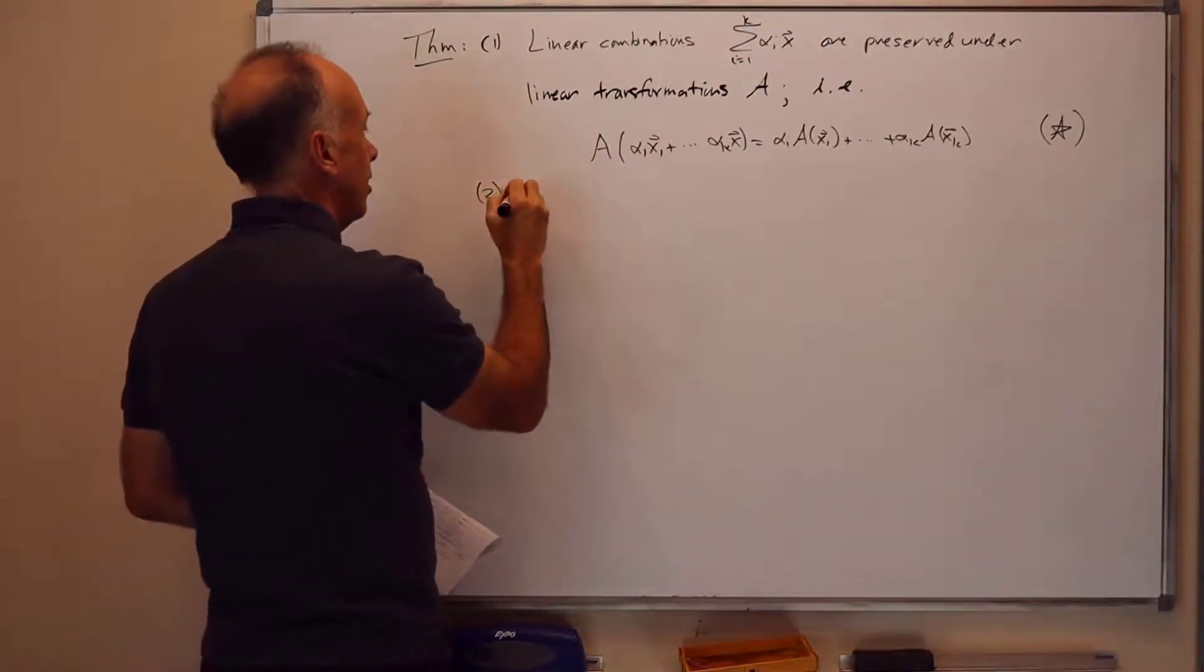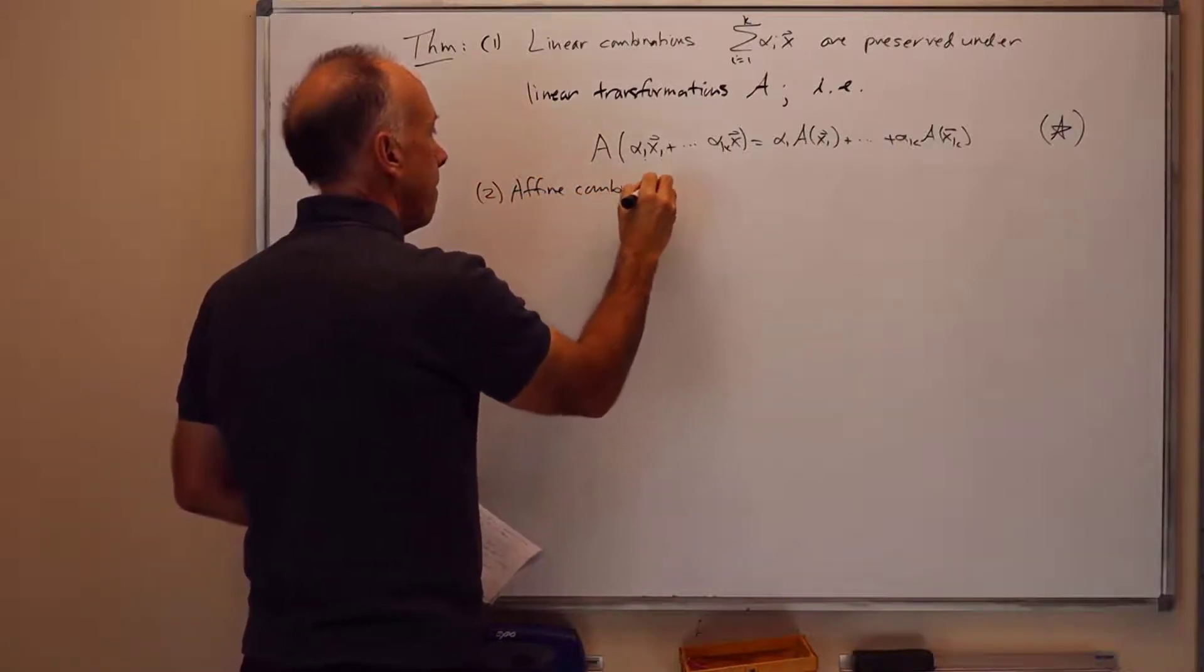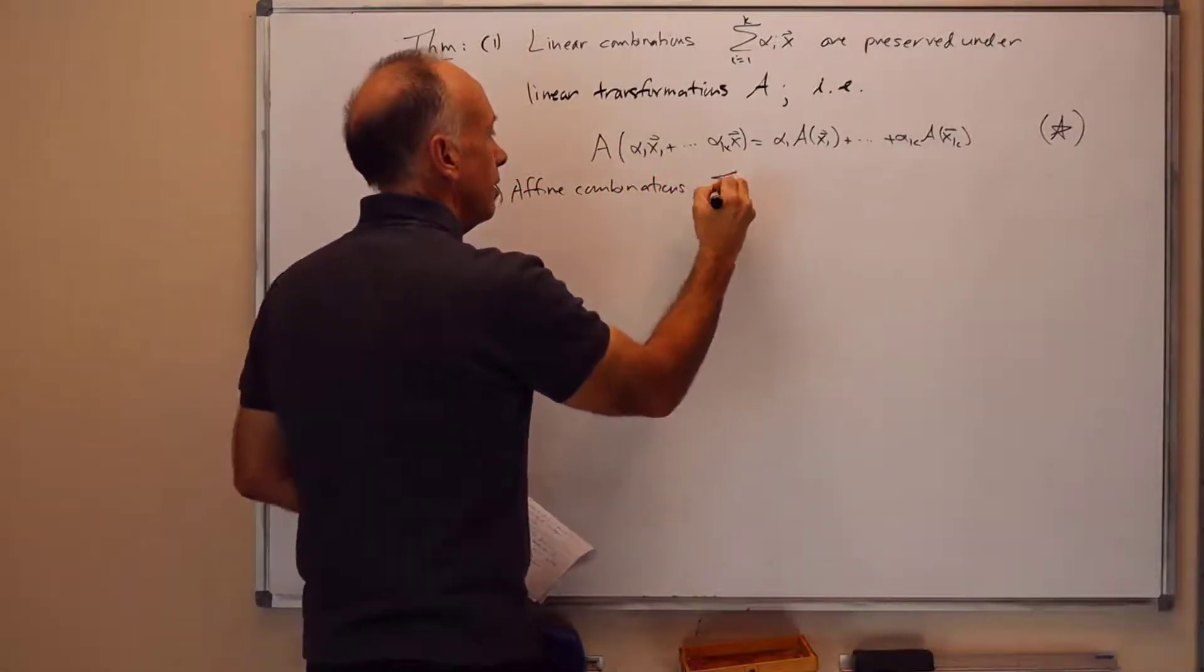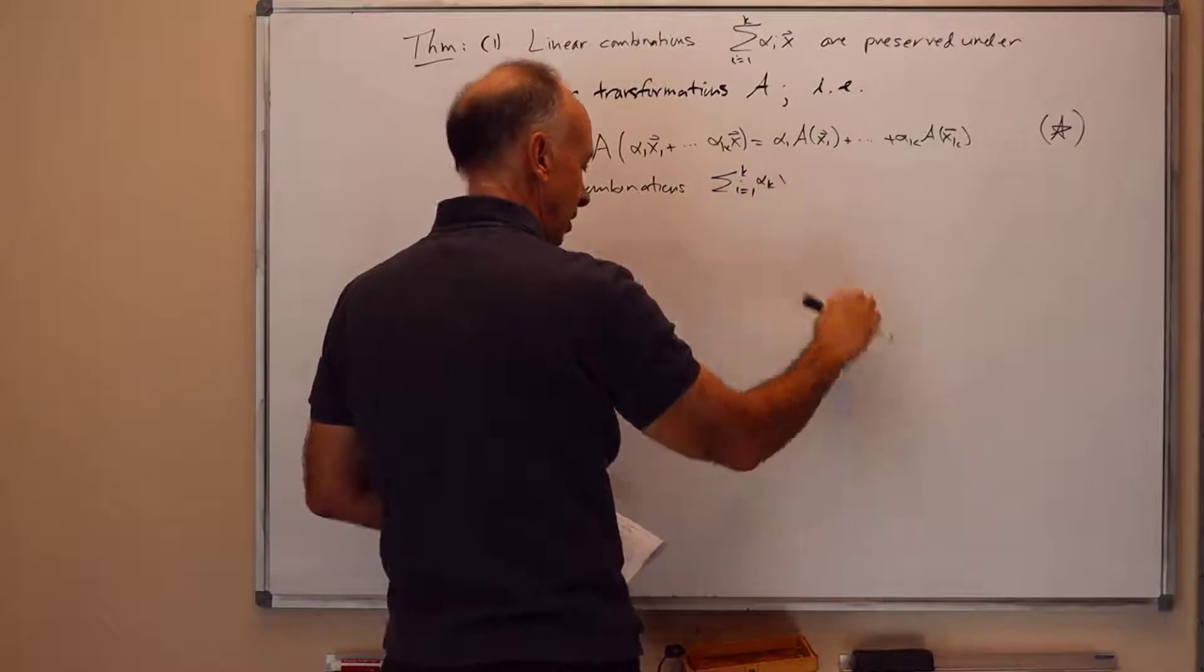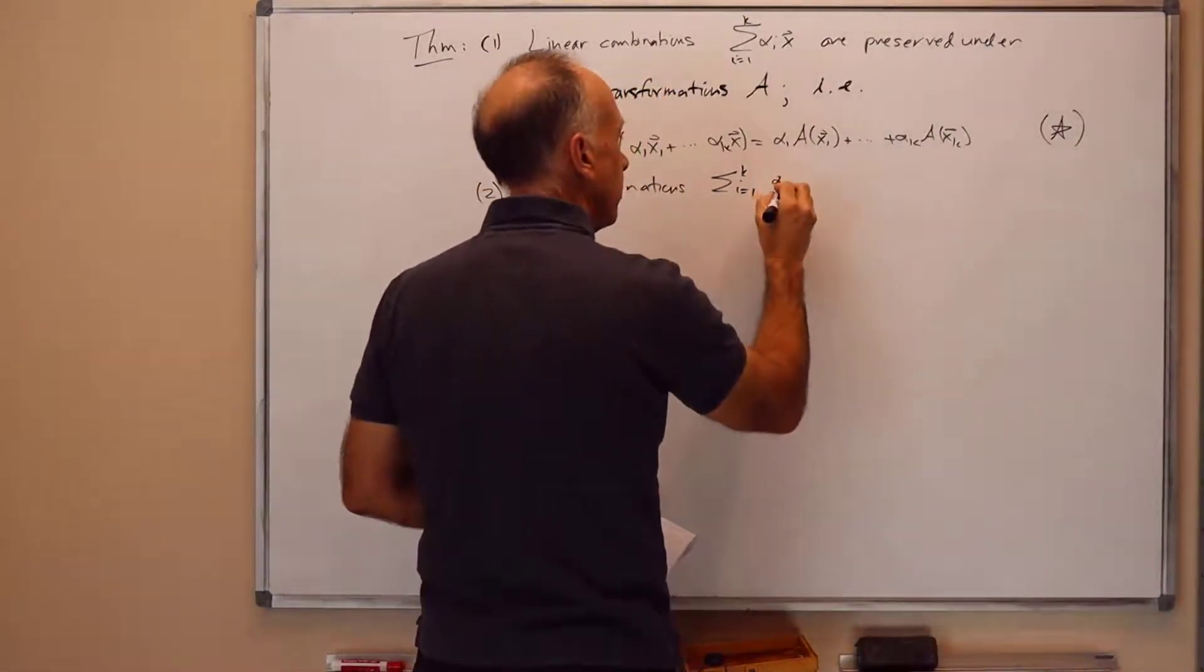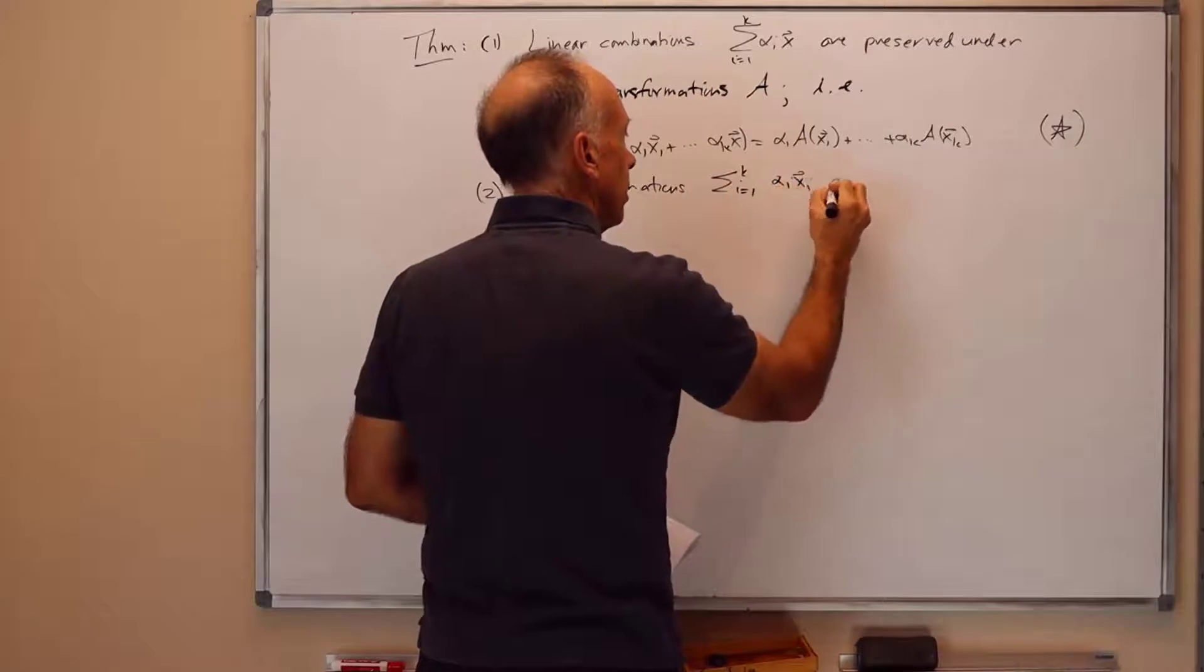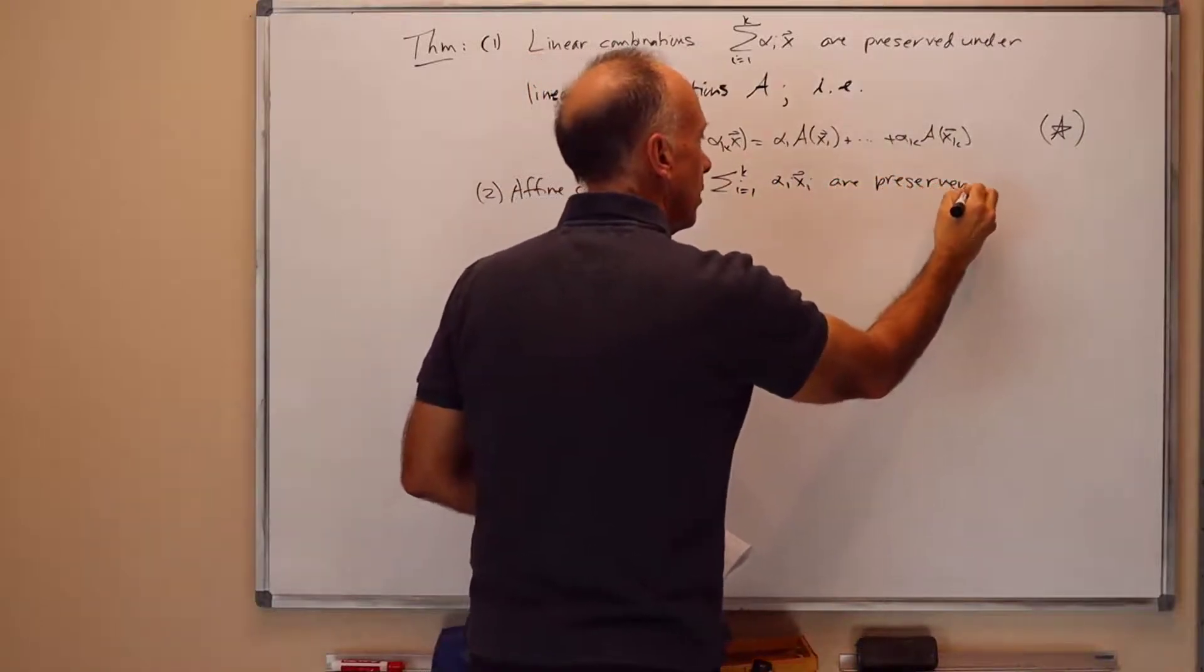But the second part here is that affine combinations, summation i equals 1 to k of alpha i xi, are preserved under linear transformations.